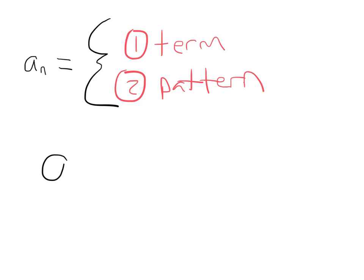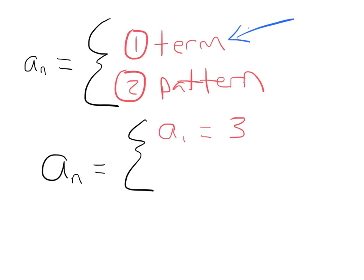Now let's think of a sequence. In sequence A, the way I find the nth term is: if n equals one, then the nth term is three. That's telling me the first term is equal to three. This part of the recursive definition tells me what the first term is — specifically, the first term is three. Now the second part needs to tell me a pattern, that is, how do I find the next term? Let's say our rule is that we're going to add four every time.